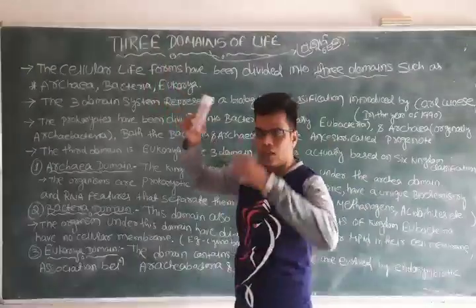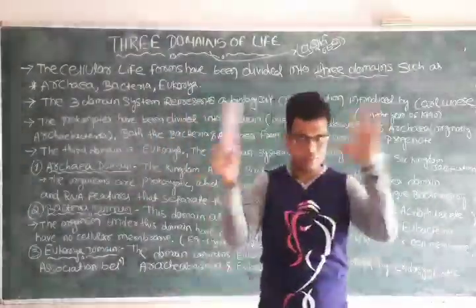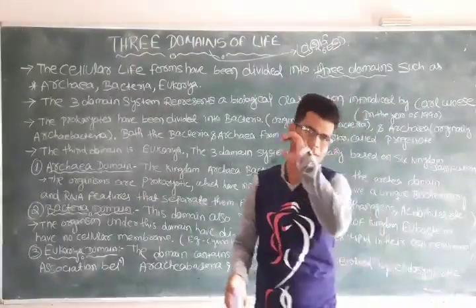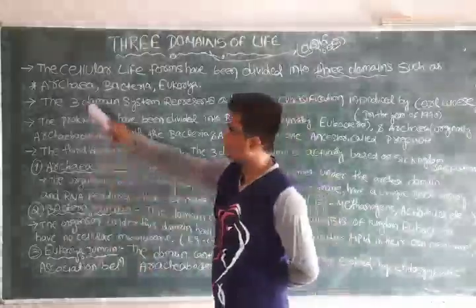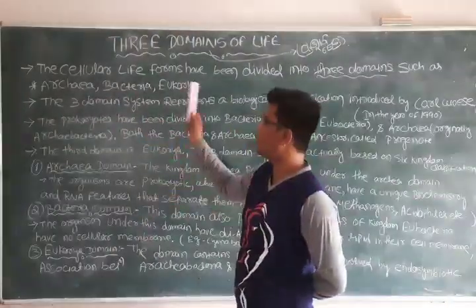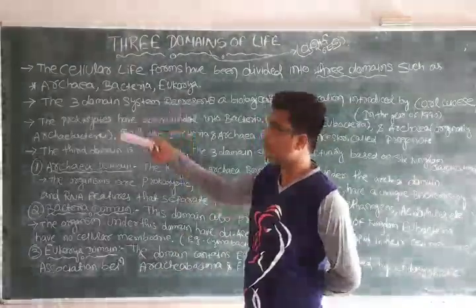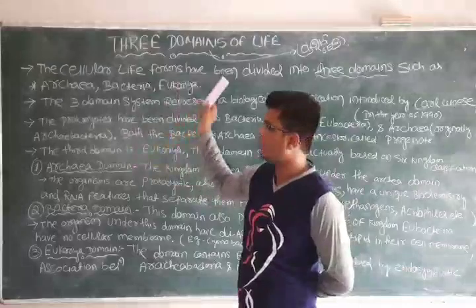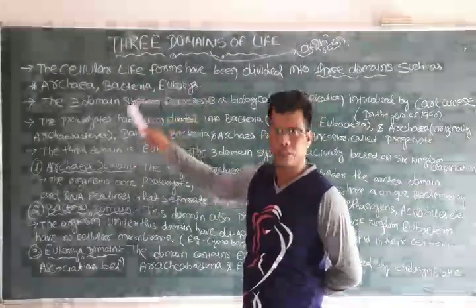The cellular life forms have been divided into three domains. The organisms made up of cells — these are the cellular lives. The cellular life forms have been divided into three domains: the Archaea domain, the Bacteria domain, and the Eukarya domain. All life in our surroundings is totally divided into these three domains.